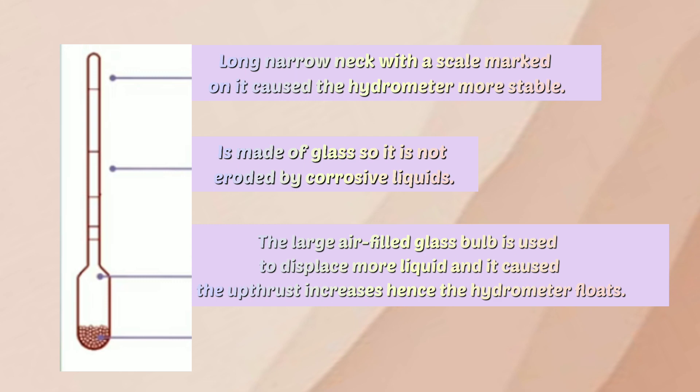The large air-filled glass bulb is used to displace more liquid and it causes the upthrust to increase, hence the hydrometer floats. A glass bulb contains some lead to make it float upright.